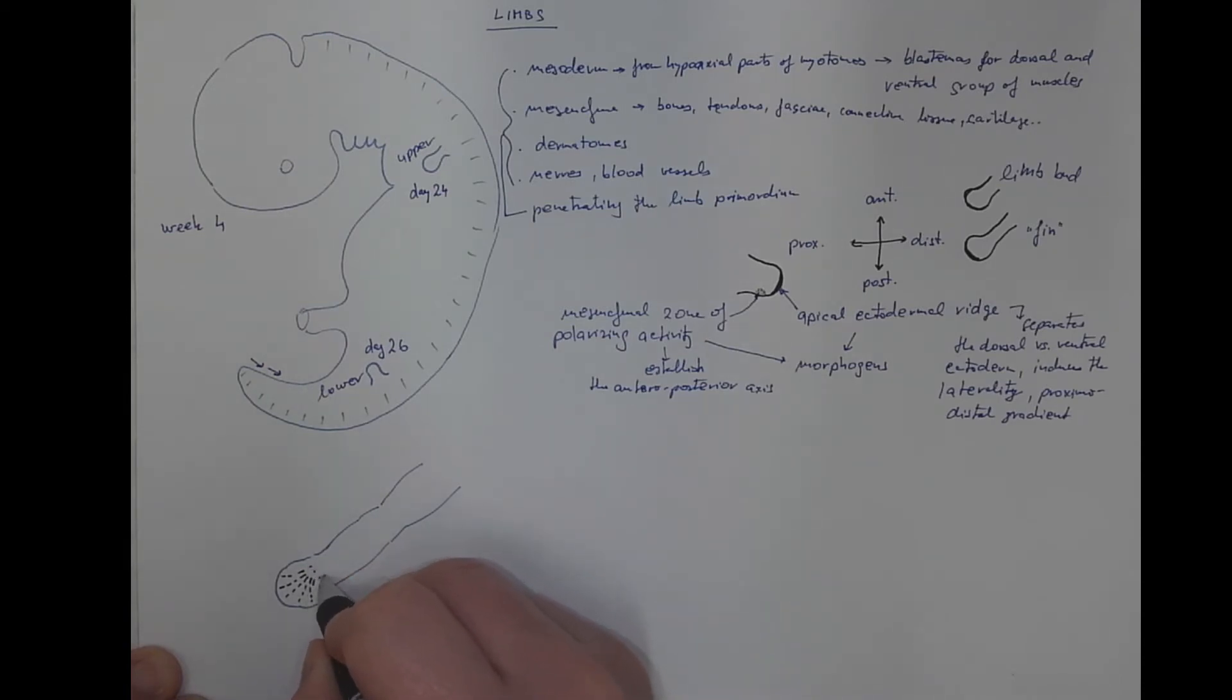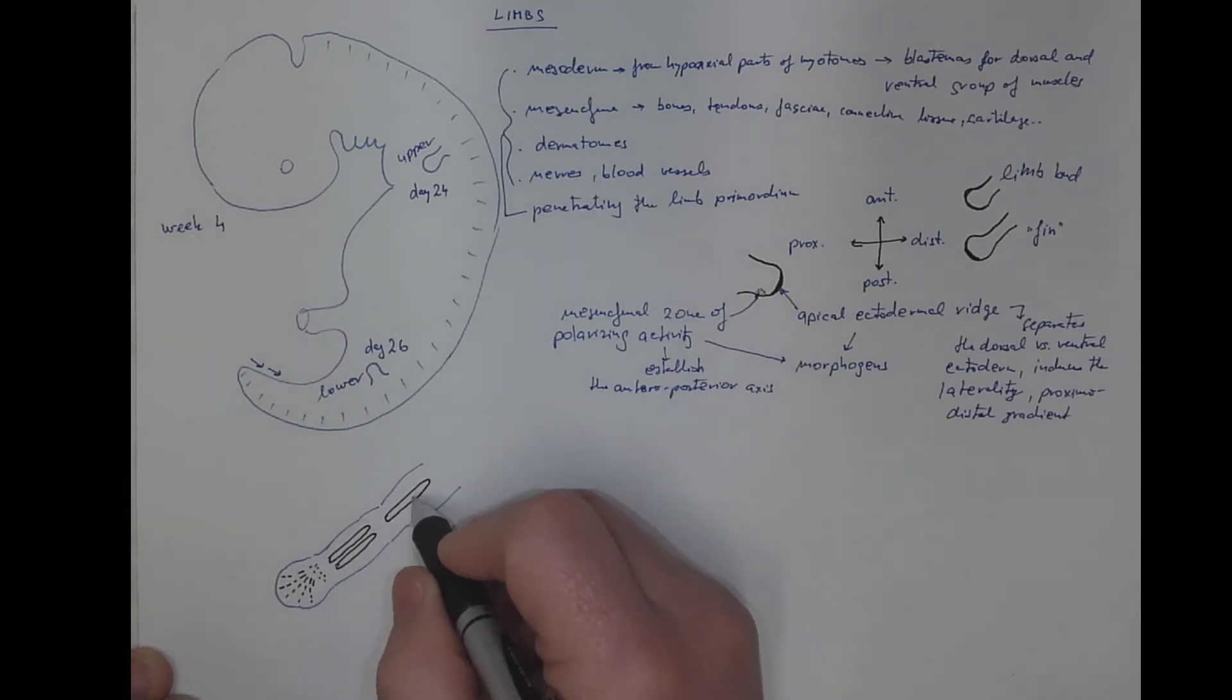The carpal bones, well, they are not eight at the beginning, but just for the simplification. There's the autopodium. Then there's a zugopodium with two pieces of a cartilage that will ossify into the radius and ulna, and there's a stylopodium with one cartilage that will be the humerus.